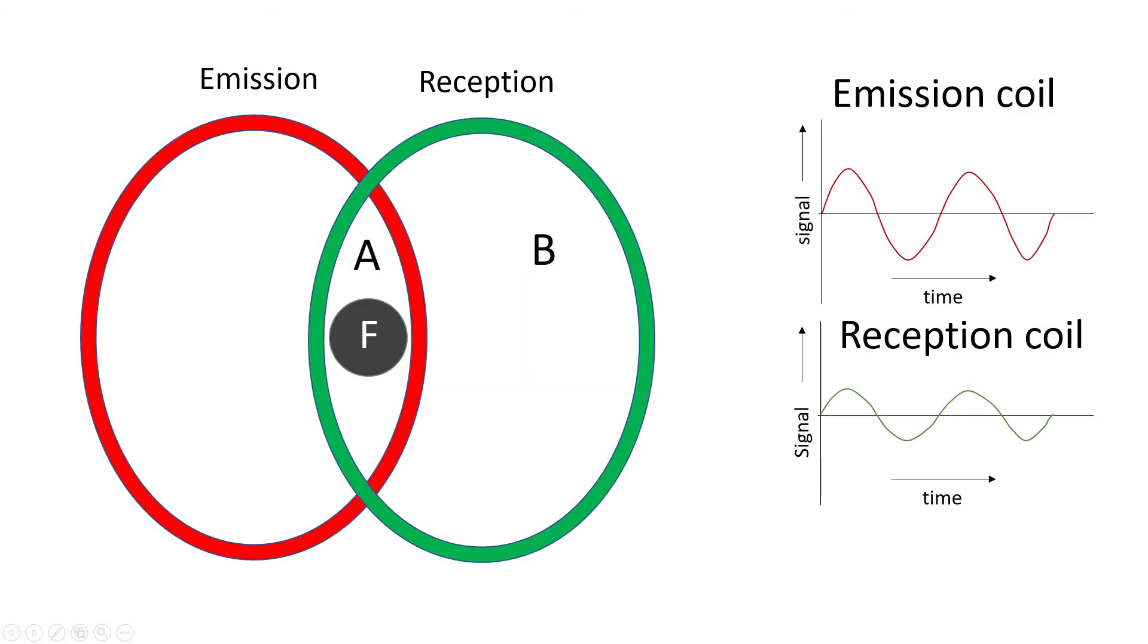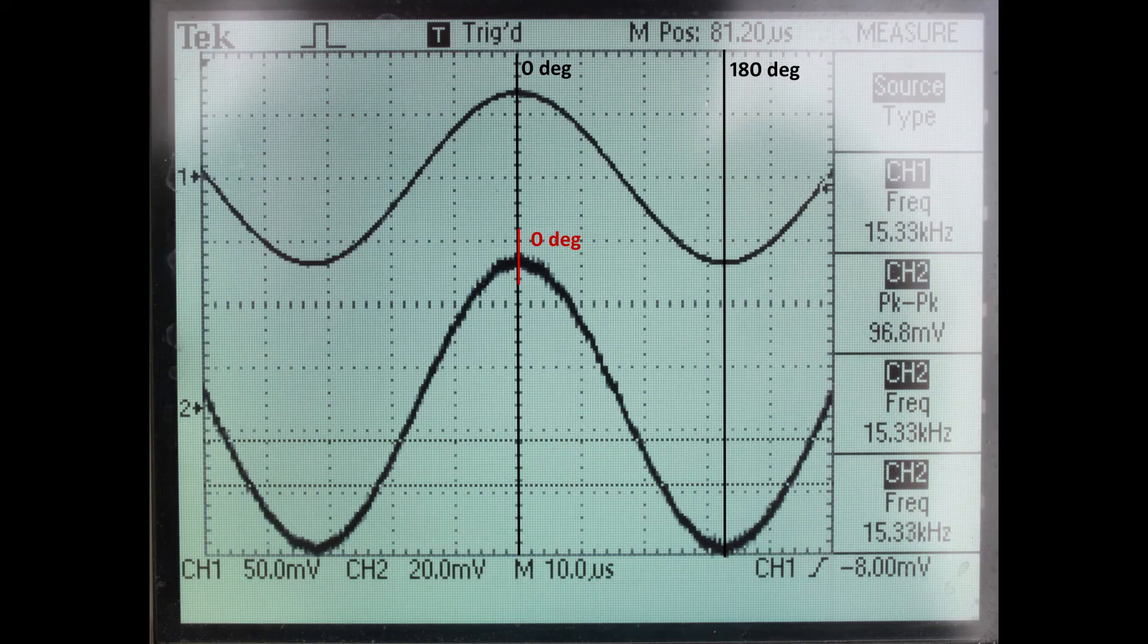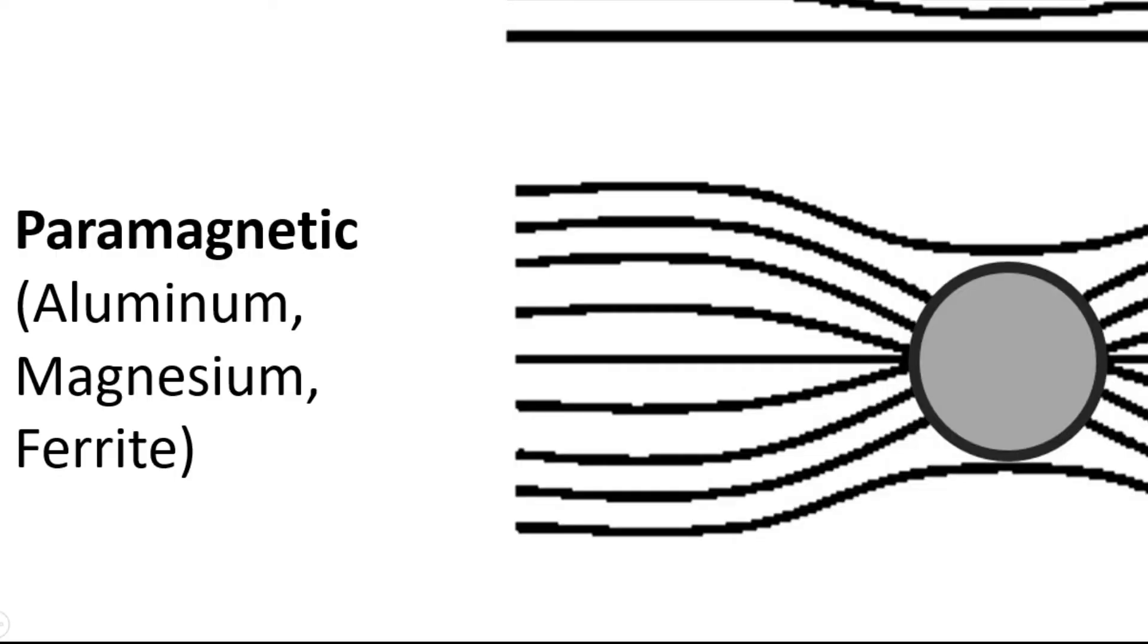If you consider this effect in our setup, the presence of ferrite in area A will actually increase the alternating magnetic field of the emission coil in this area, which means that we will detect an in-phase signal. But of course there is more to it.